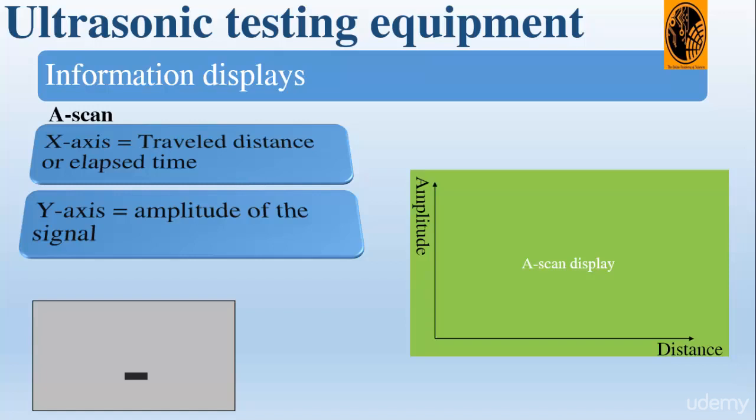First, the A-scan method. The ultrasonic A-scan presents one-dimensional data showing the response along the beam path at the specific location of the test object.